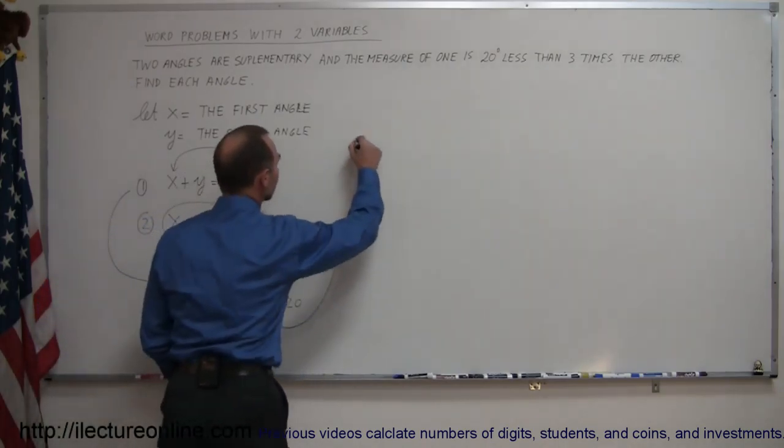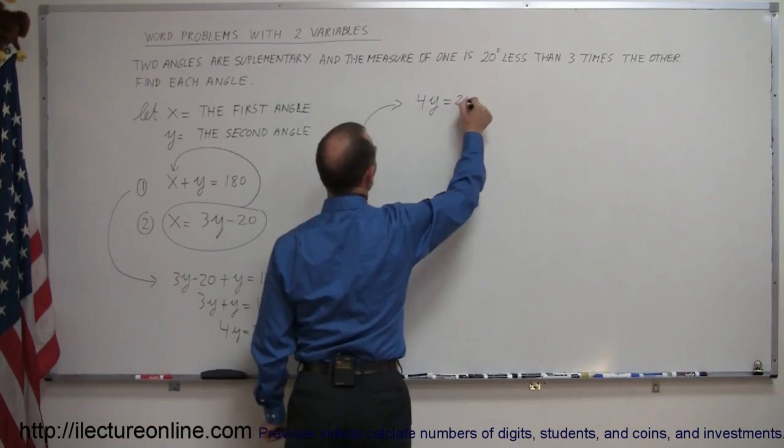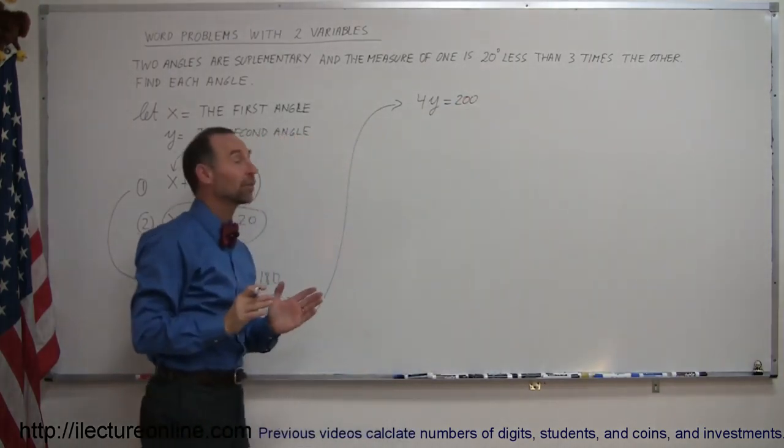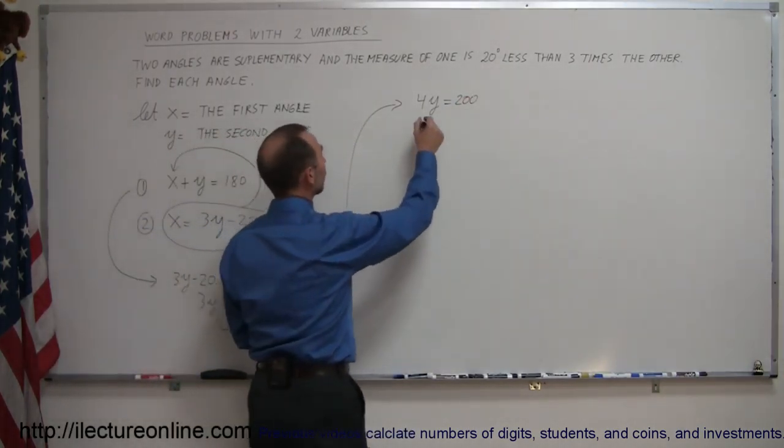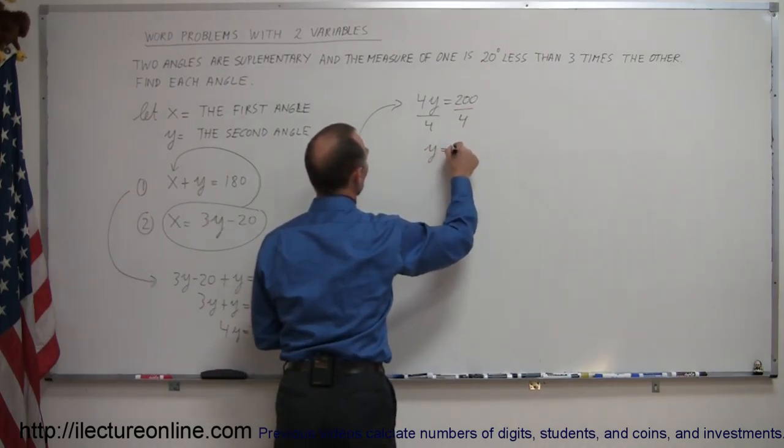And then moving up here, so we had 4y equals 200. And now I divide both sides of the equation by the coefficient in front of y. So divide this by 4, divide this by 4, and I get y equals 50.